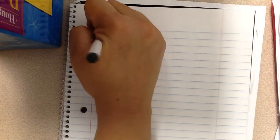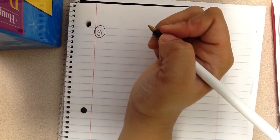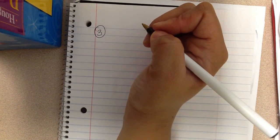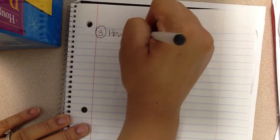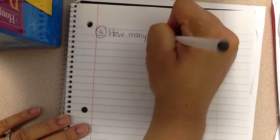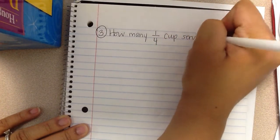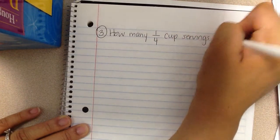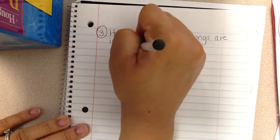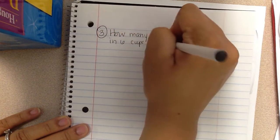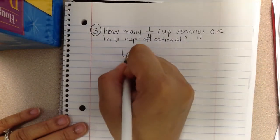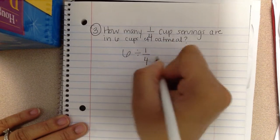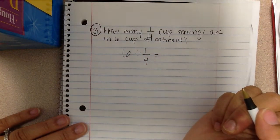I'm going to move on to number three. Number three, how many one fourth cup servings are in six cups of oatmeal? So this is taking six whole cups and dividing it by one fourth to figure out how many of those servings are in that size.